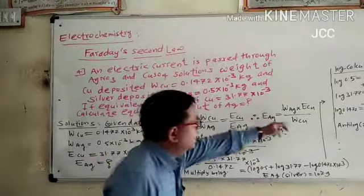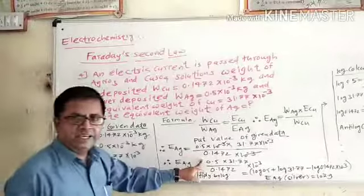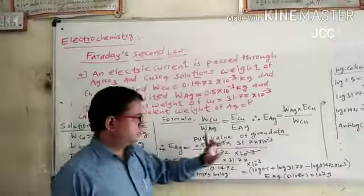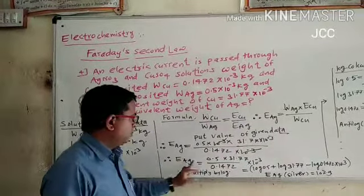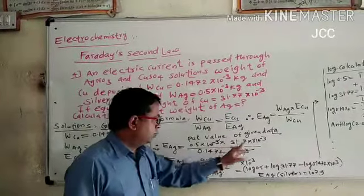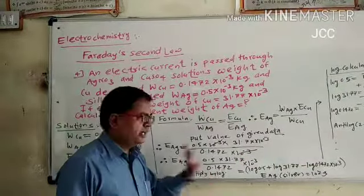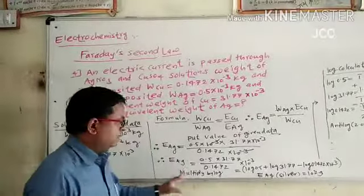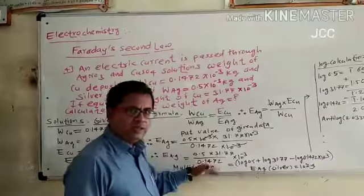Now, WCu is 0.147 × 10^-3, which equals 0.147 × 10^-3. It's divided by 0.5 × 10^-3, which is 10^-3. Now multiply by log.